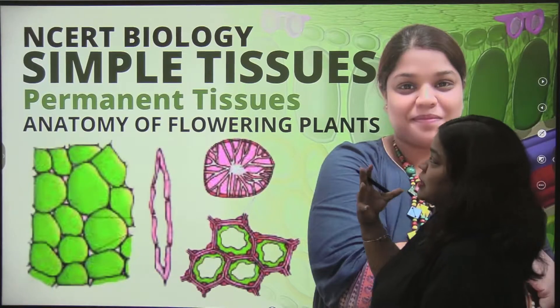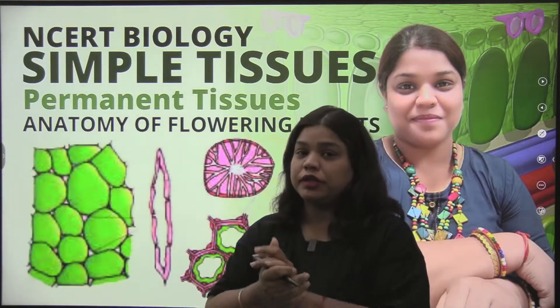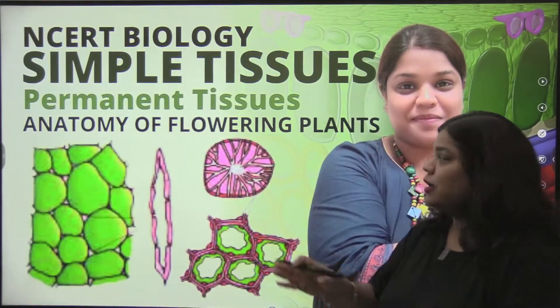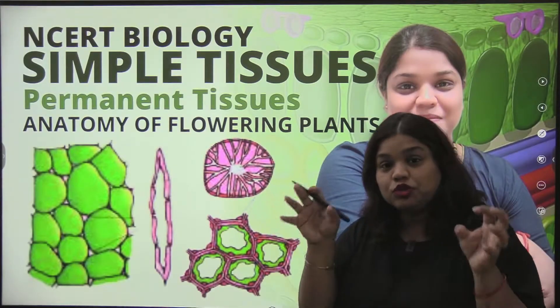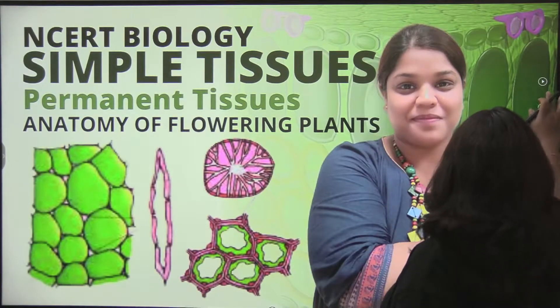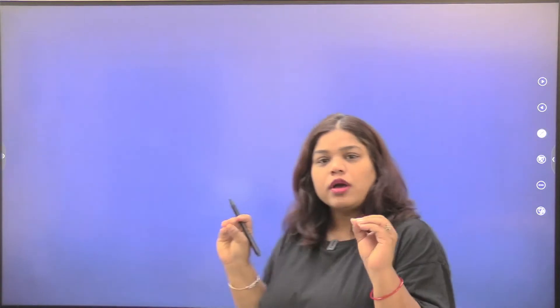What do you understand by simple tissues and permanent tissues? Meristematic tissue keeps dividing, while permanent tissue does not divide. Simple tissues are those you will see at every place. Complex tissues, which we will see in xylem and phloem a little bit later, have different structures.